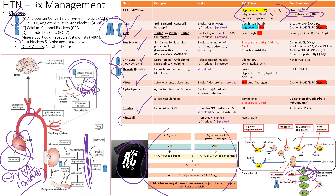ARBs — angiotensin receptor blockers — stop angiotensin 2 from binding to those vessels and lead to vasodilation and a reduction in blood pressure. Our blood pressure target is less than 130 over 80. Beta blockers, calcium blockers, and ACE inhibitors all help. Nitrates increase nitric oxide flow, which is a vasodilator. Minoxidil works on potassium channels. Alpha agents either block alpha-1 or potentiate alpha-2, which is the off switch for the SNS.